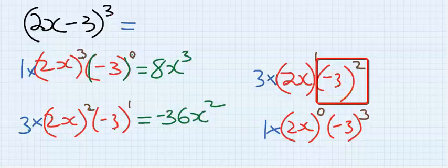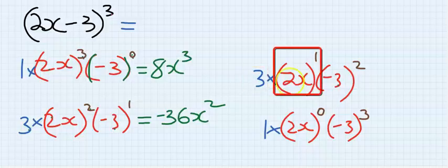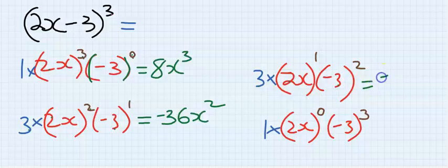Minus 3 times minus 3 is 9. 9 times 3 gives 27. 27 times 2 gives 54. The x power is 1, so we have 54x.